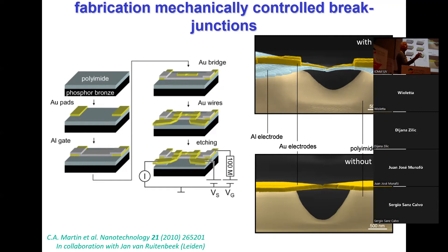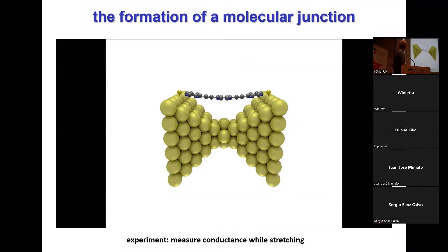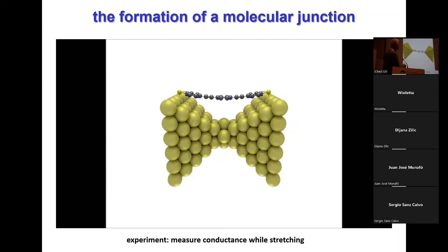The fabrication of such a device takes a few days, but you can make many at the same time — about 10, 20, or 30 substrates simultaneously. This is what happens when we break the wire: we have the gold atoms, a molecule — this is our fruit fly OPE3 molecule — and you break it. You see one gold atom, then you separate the two electrodes. What you hope is that you have your molecule in between the two electrodes, bridging from one side to the other, and then you can measure the conductance while opening up the electrodes.